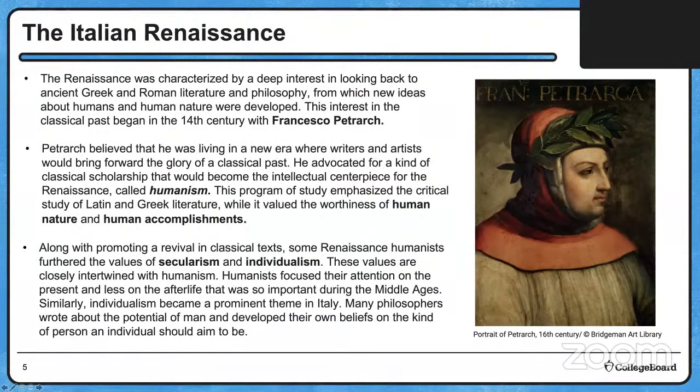These values are closely intertwined with humanism. Humanists focused their attention on the present and less on the afterlife that was so important during the Middle Ages — very secular, very worldly. Similarly, individualism became a prominent theme in Italy. Philosophers wrote about the potential of man and developed their own beliefs on the kind of person an individual should aim to be.